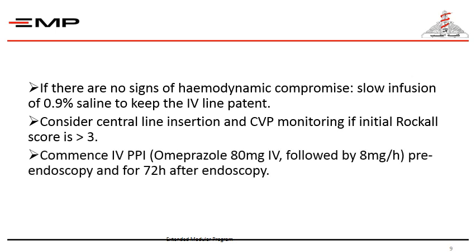PPIs help to maintain the stability of any formed blood clot within the gastrointestinal tract, as they reduce gastrointestinal acidity. So we have to commence intravenous PPI — proton pump inhibitor — such as omeprazole 80 milligrams IV, followed by 8 milligrams per hour pre-endoscopy and for 72 hours afterwards.